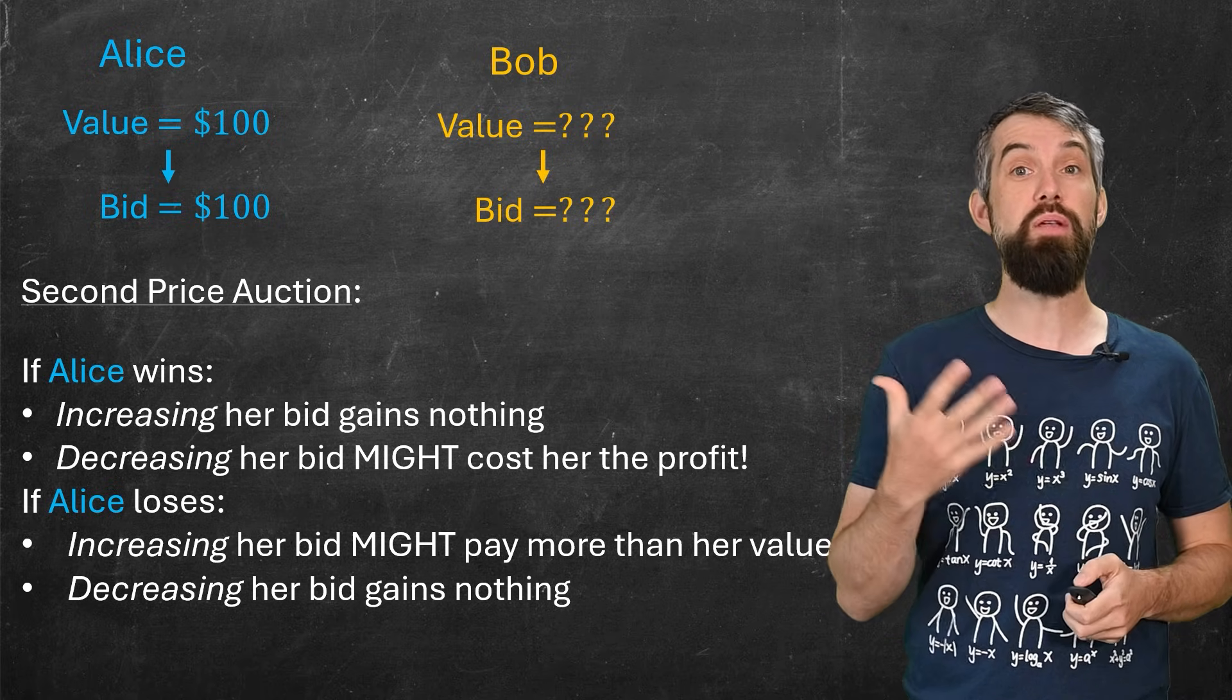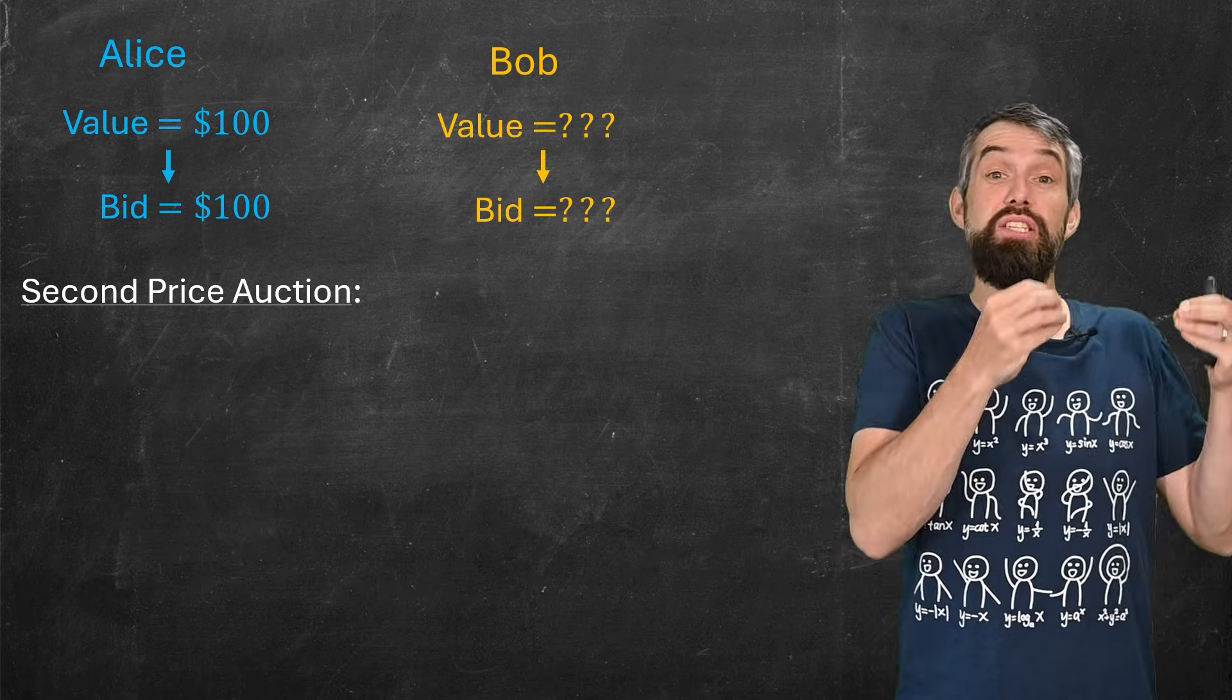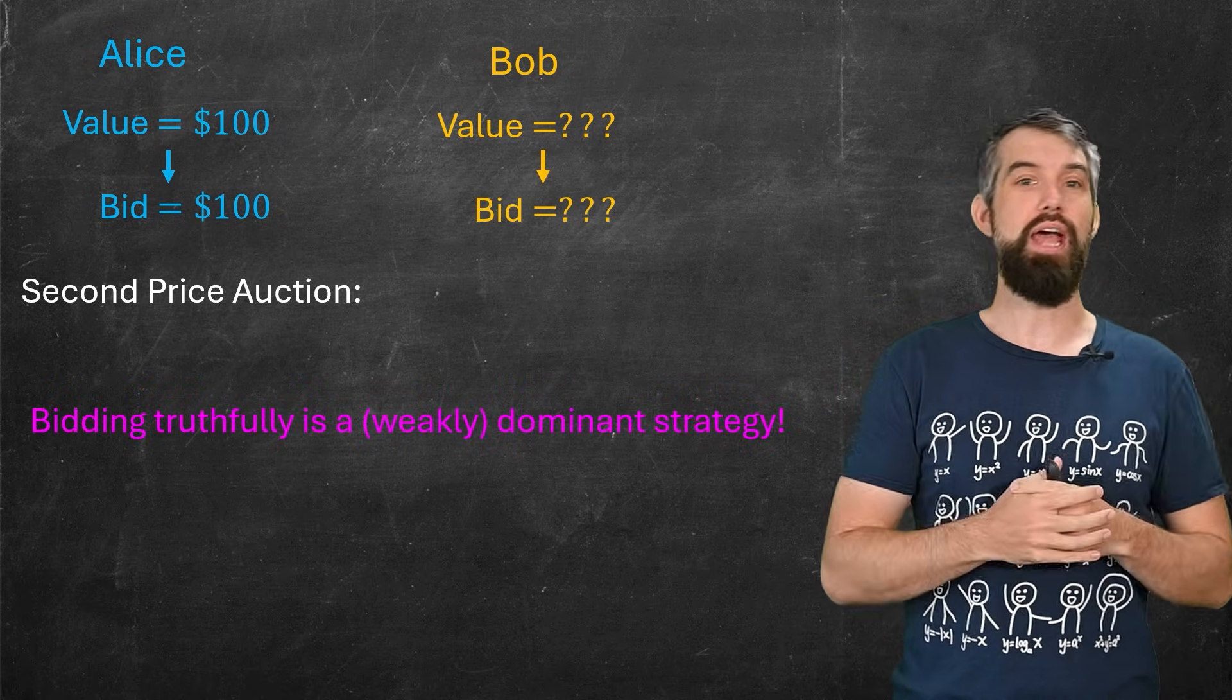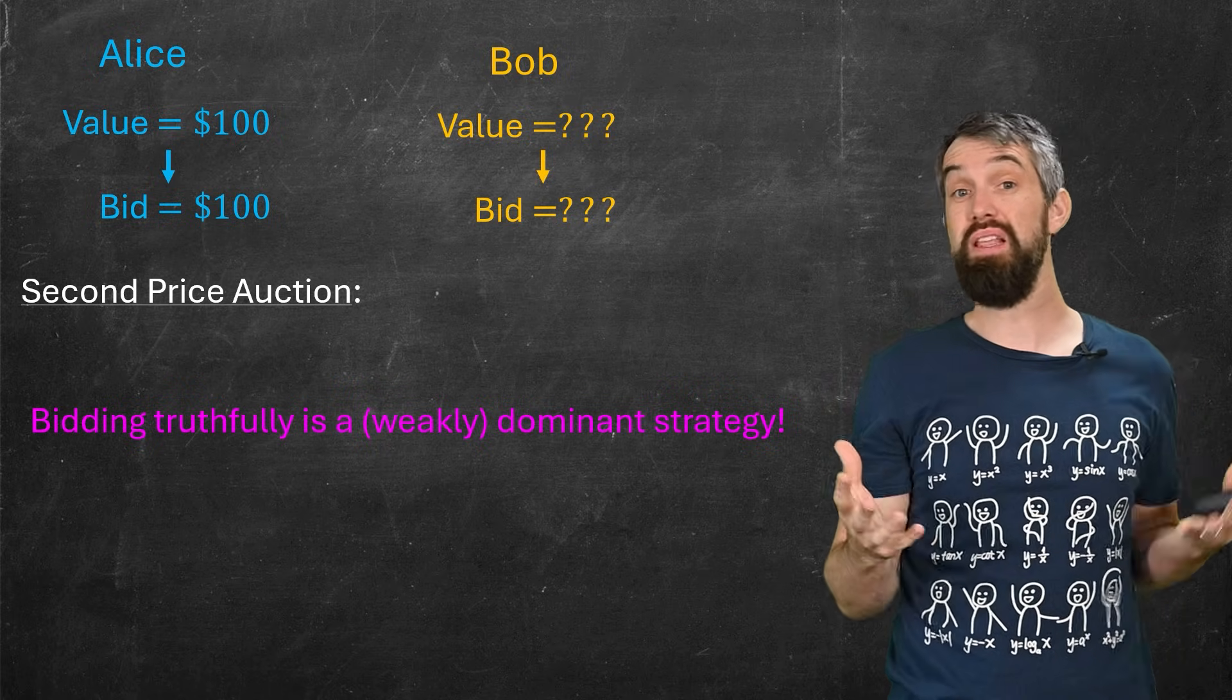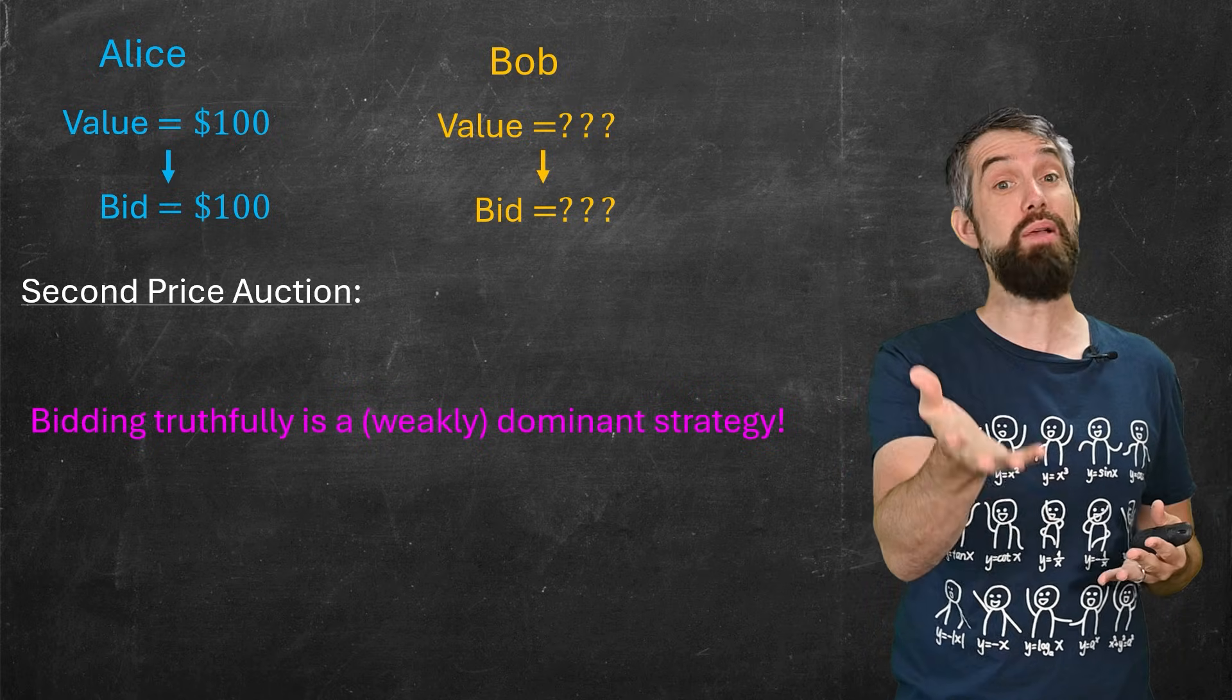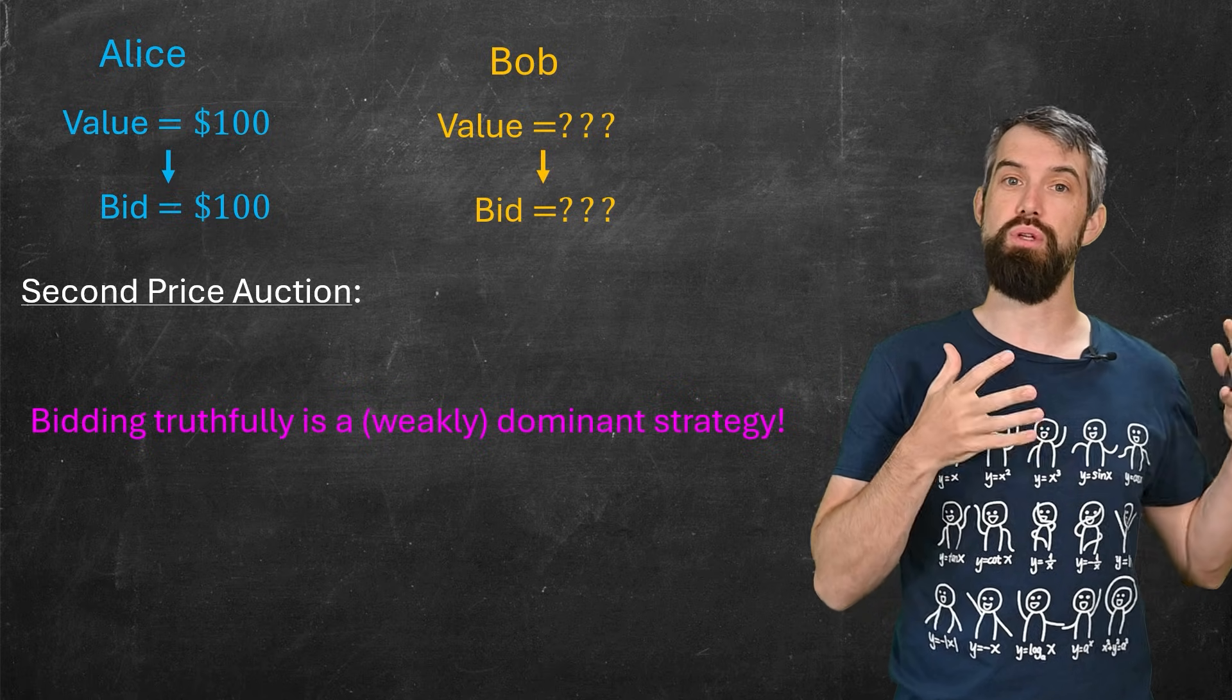And indeed, this is the defining principle of a second price auction, which is that it incentivizes truthful bidding. And the fancy way that we call this, in game theory speak, is it's a dominant strategy. If everyone's bidding their true values, there's nothing that you can do to make more money to exploit that game. You may as well just bid the true value yourself.